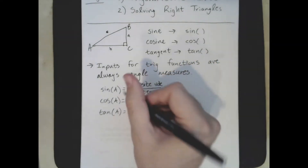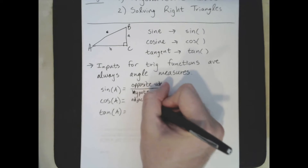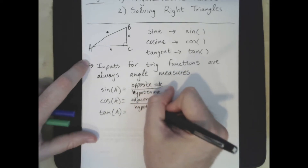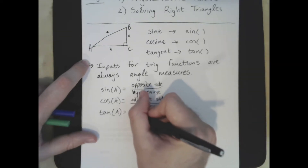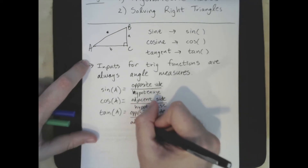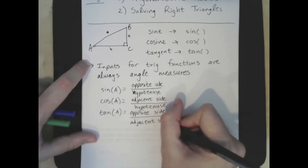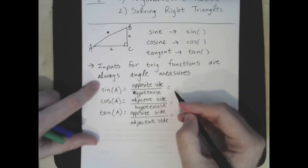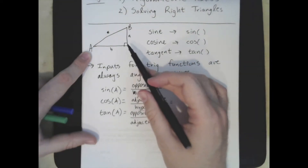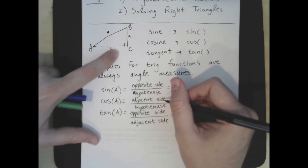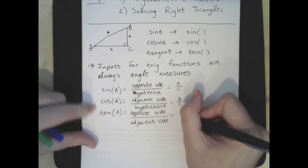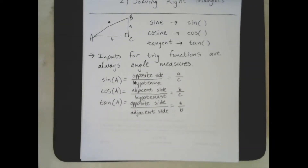Cosine is always the adjacent side over the hypotenuse, and tangent is always the opposite side over the adjacent side. For angle A in our triangle, the opposite side is little a, the hypotenuse is always little c (across from the 90-degree angle), the adjacent side for cosine is little b over c, and tangent is the opposite side over the adjacent side — a over b.